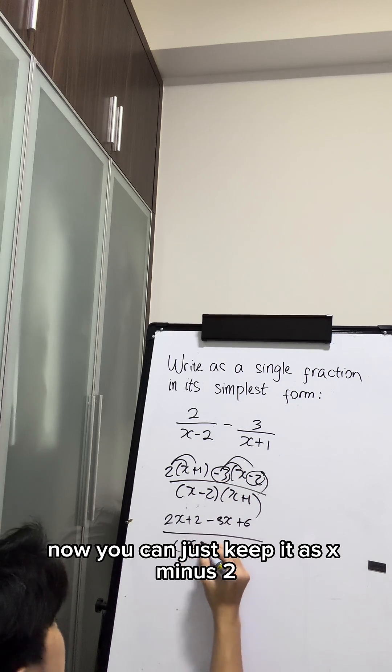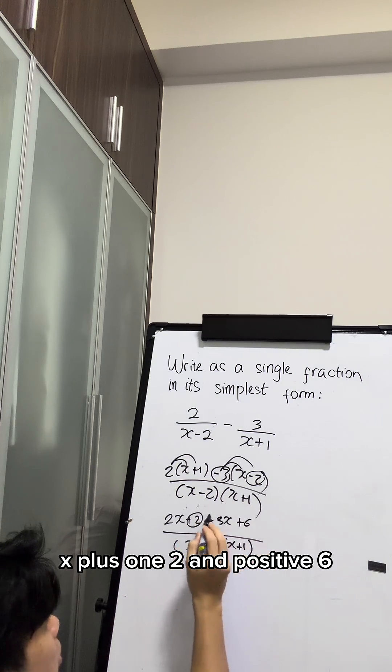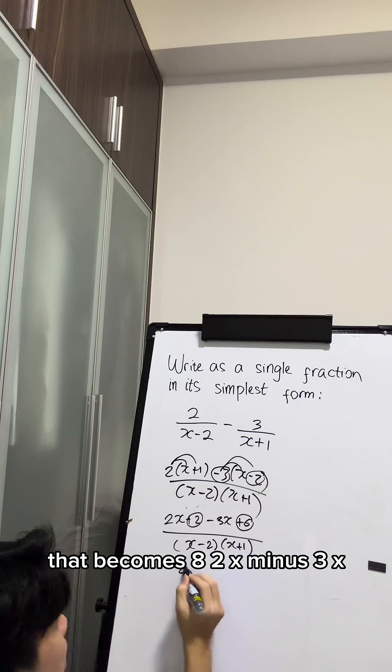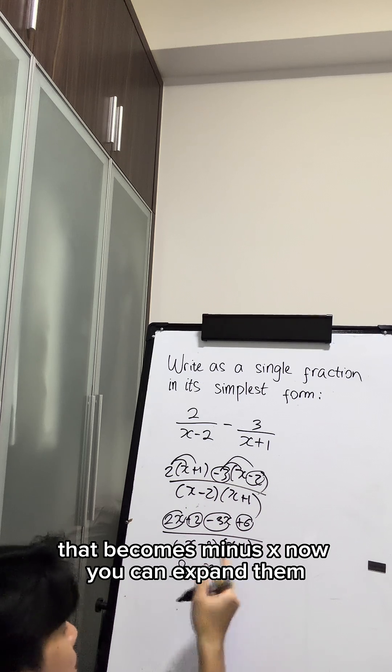I can just keep it as x minus 2, x plus 1. 2 and positive 6, that becomes 8. 2x minus 3x, that becomes minus x. Now you can expand them.